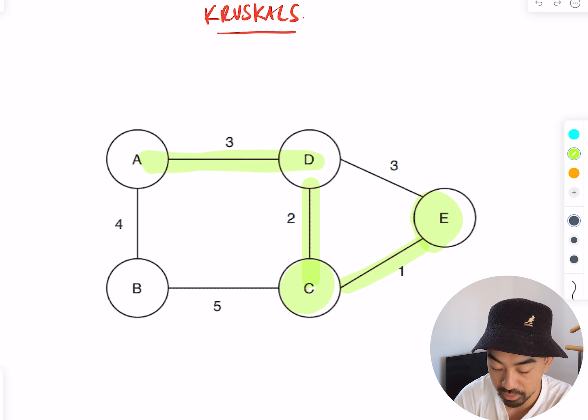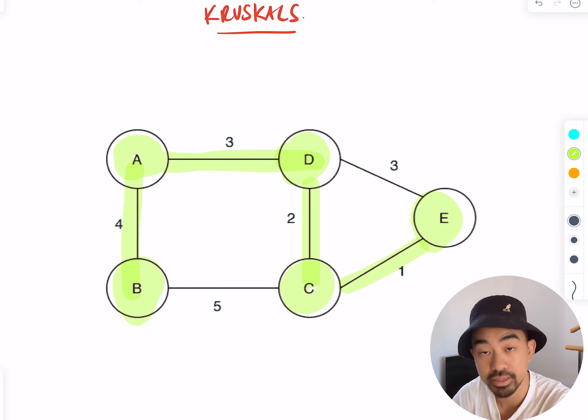Now the only one remaining is connecting vertex B, so I have to choose four, and that's it.